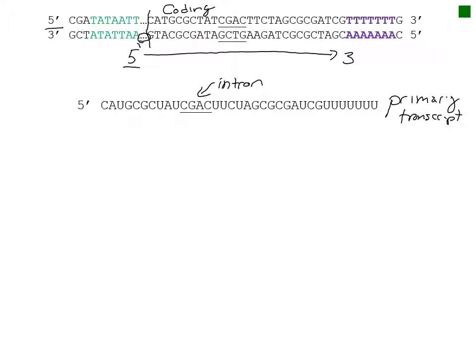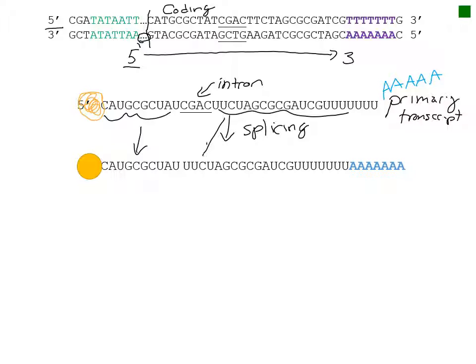Because this is a eukaryotic gene, the primary transcript will then be modified by the addition of a 5' cap and a 3' poly A tail. The third step is the removal of the intron through splicing. Splicing will take our exon here and attach it to the second exon, causing the intron to be deleted. This has formed mature messenger RNA, which is now ready for translation.